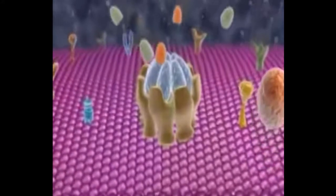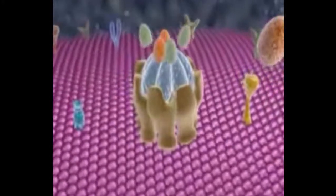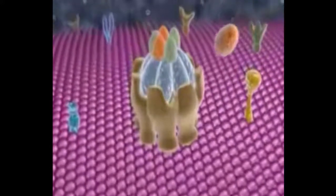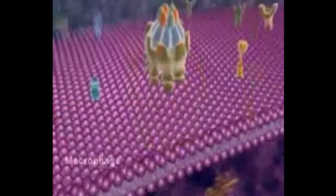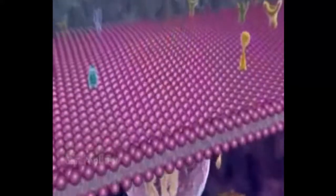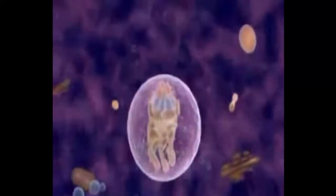The two other proteins of anthrax toxin are both enzymes that disrupt the signaling functions of the cell. Once they bind to the heptamer, they are delivered by endocytosis into the cytoplasm.